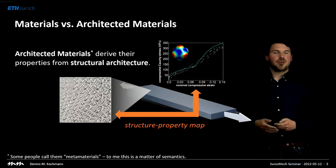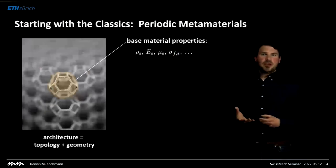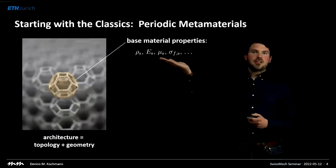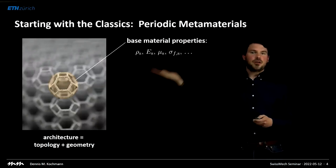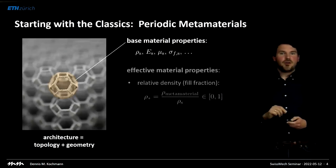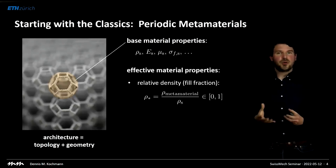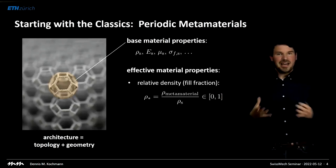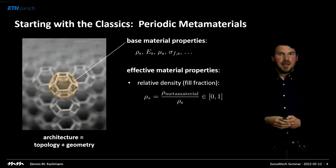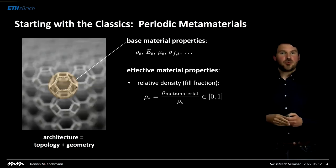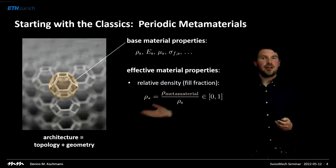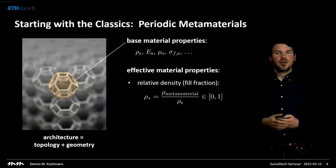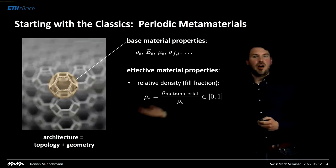A key distinction is base material versus effective material. The base material is what these structures are made of — it could be a polymer, ceramic, metal, or composite — and it has certain base material properties. The effective material properties are those we observe when we subject the structure at a larger scale to loading of any sort. One effective property that's generally very important is the relative density: the fill fraction, or how much of the volume is filled with solid. If you had a monolithic material that would be 100%; as we remove material to create cellular architectures, that number decreases toward zero.